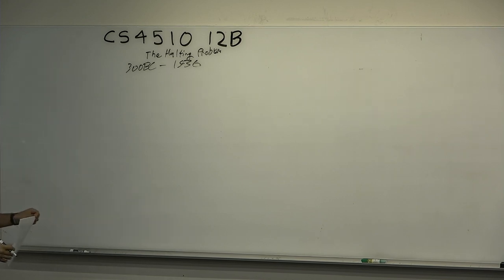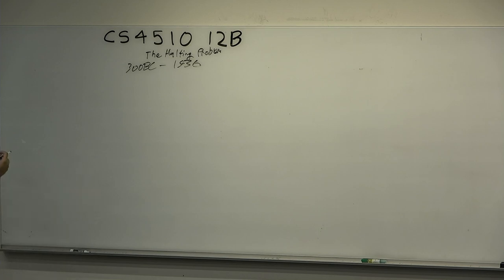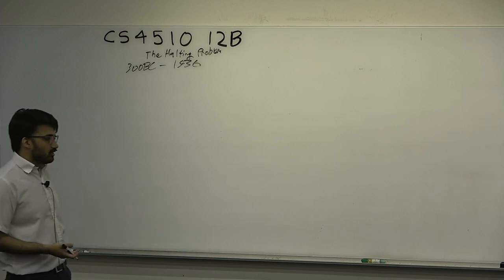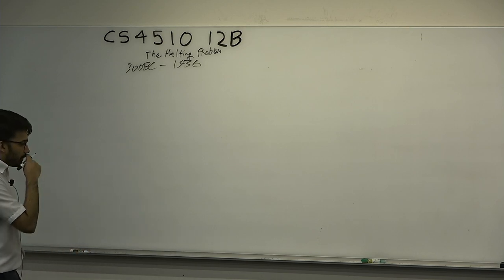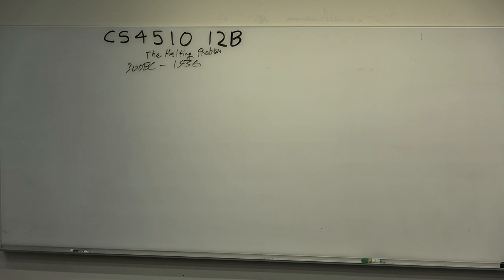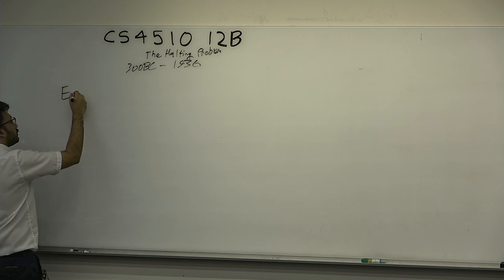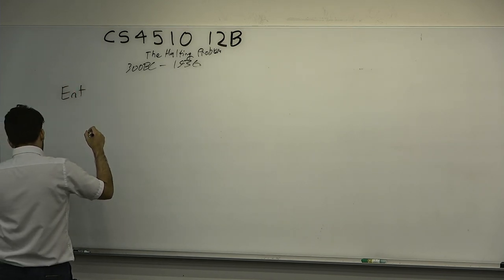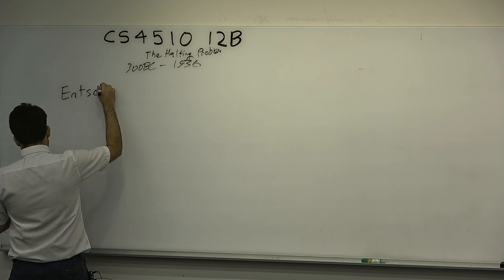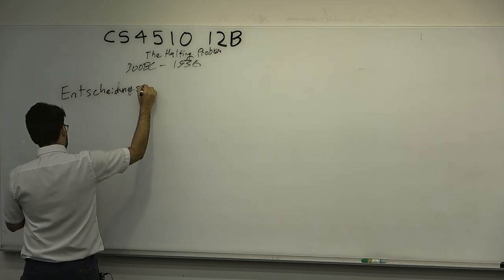Alan Turing is a young guy. He's British, he's in England. He takes a course on the foundation of mathematics. They're telling him about Gödel and completeness theorems. He's learning about Principia Mathematica and all the things we're learning about now. There's one open problem. All of Hilbert's program has been defeated by Gödel at this point—it's unsalvageable. There's one part left, which is on decidability. During the class he learns about this open problem called the Entscheidungsproblem.